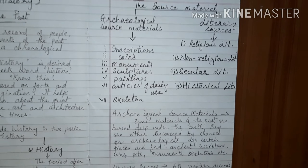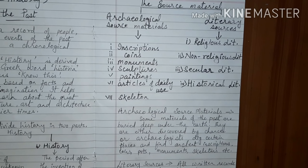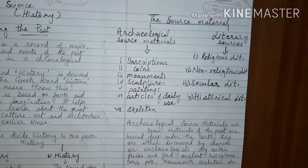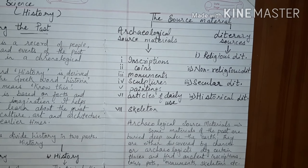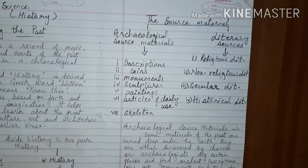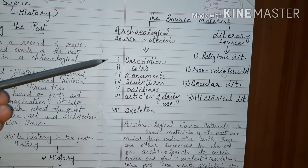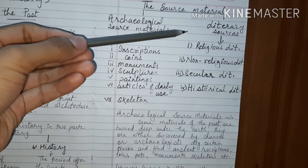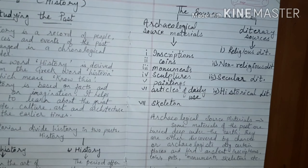What are the source materials to study the past? The source material can be divided into two categories: archaeological source materials and literary source materials.